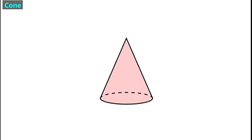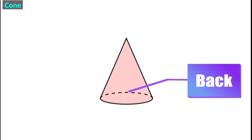On our math tests, the test makers often draw a cone with a dotted line in the back referring to the curved line that we can't see directly, because it's on the back.